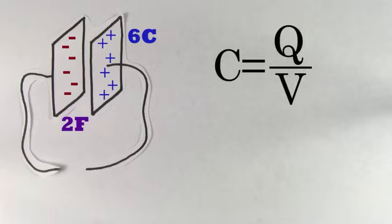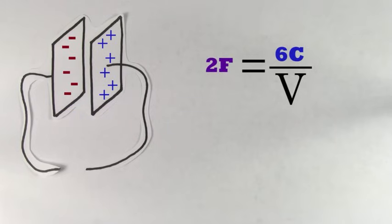For another example, say that a 2-farad capacitor stores a charge of 6 coulombs. We could use this formula to solve for the voltage across this capacitor, which in this case is 3 volts.